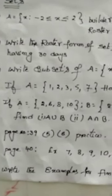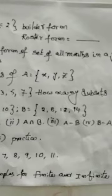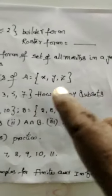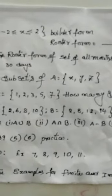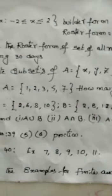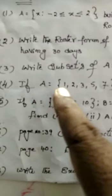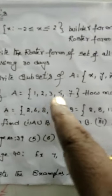Write the subsets of A = {x, y, z}. Next, if A = {1, 2, 3, 5, 7}, how many subsets?